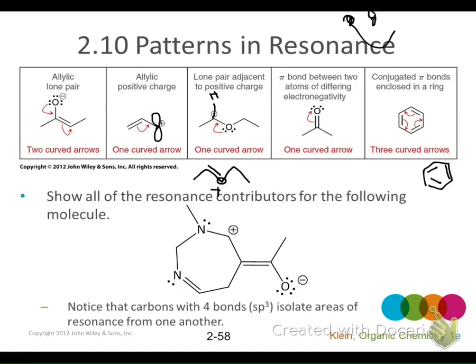What are the possible resonance contributors for this molecule? The nitrogen here — you can donate a pair here, because this has just a hydrogen in the open P orbital, that's why it's got the positive charge. So I can take this pair and go like this. And what you're going to see in that position now is a double bond. You'll end up with a double bond here, and the positive charge on the nitrogen.